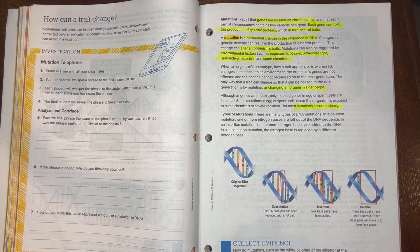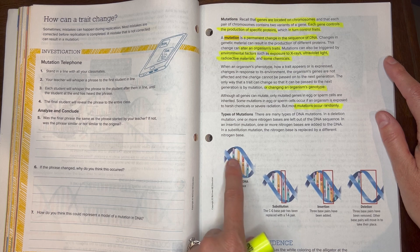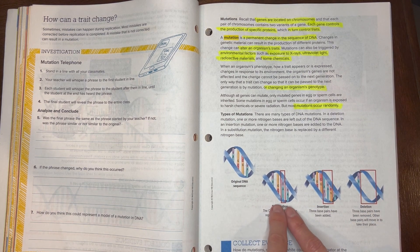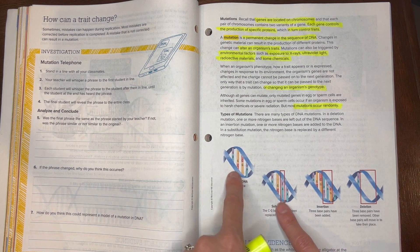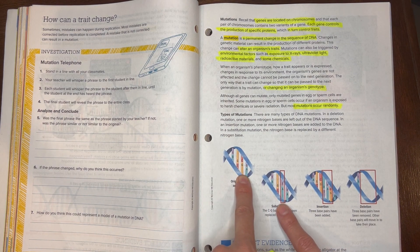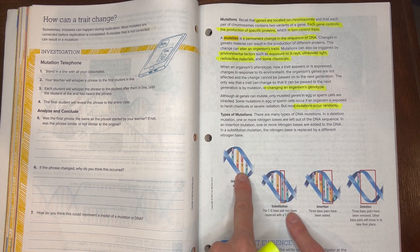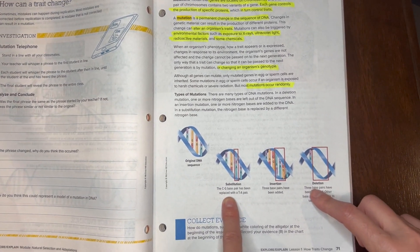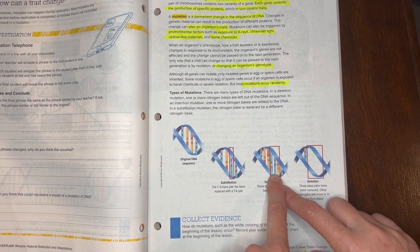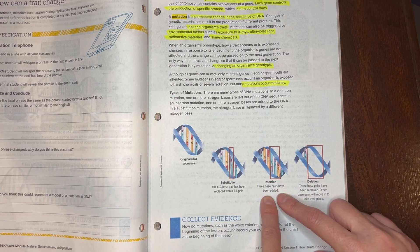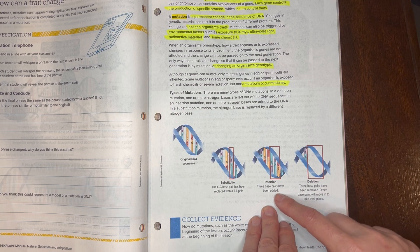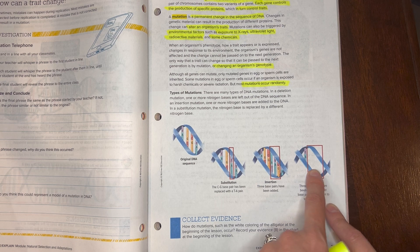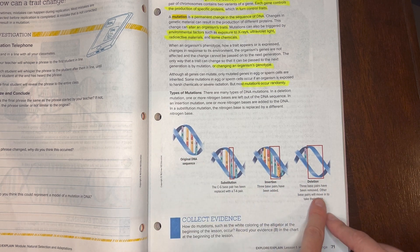While making copies of itself, you can see the nitrogen bases that we learned about previously. Here's the original one and it wants to make a copy, but sometimes it accidentally makes a substitution. There's supposed to be a CG here but then oops, here's a TA instead of the CG, so you notice how it's been replaced. Another type of mutation could be an insertion, there's an extra nitrogen base pair. Or they could possibly delete it while making a copy—it used to be there but now it's gone.